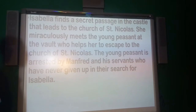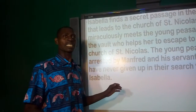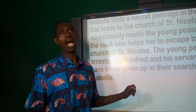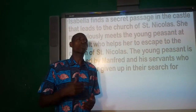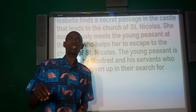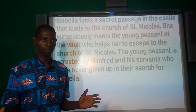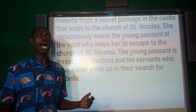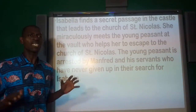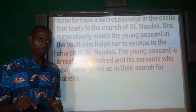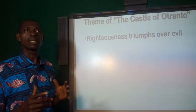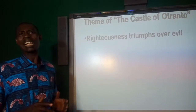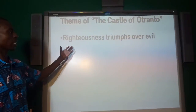The young peasant is arrested by Manfred and his servants, who have never given up in their search for Isabella. That is what transpires in chapter 1 of The Castle of Otranto. Now, when it comes to literature, we just cannot read the text for reading's sake. The theme of The Castle of Otranto is: righteousness triumphs over evil.